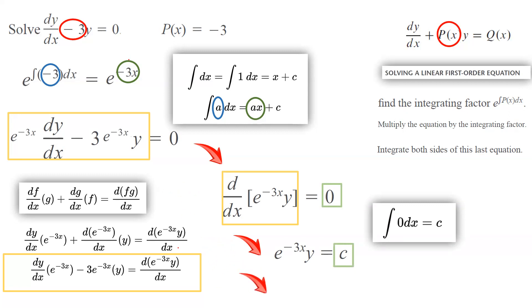Now you can write this in explicit form by dividing everything by e to the power negative 3x. So y becomes c times e to the power 3x and the domain is negative infinity to positive infinity.